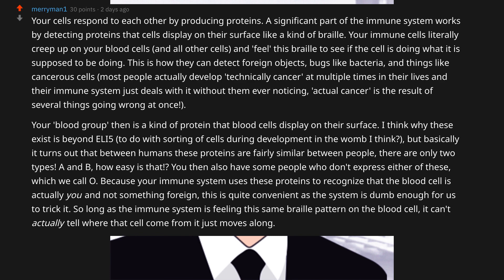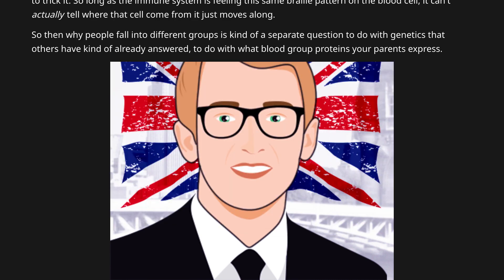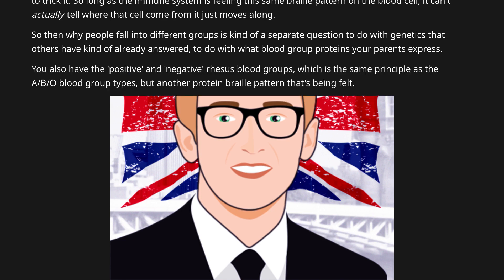Why people fall into different groups is a separate question to do with genetics — specifically what blood group proteins your parents express. You also have the positive and negative Rhesus blood groups, which follow the same principle as the ABO blood group types, but with another protein braille pattern being felt.